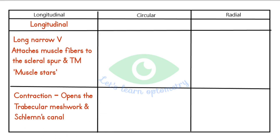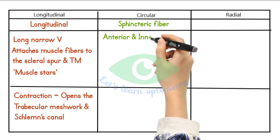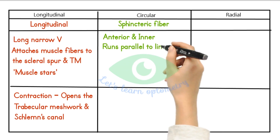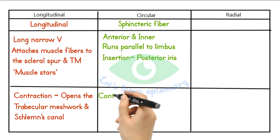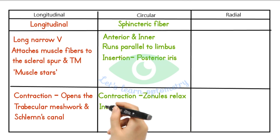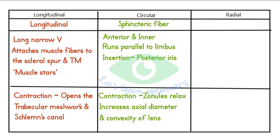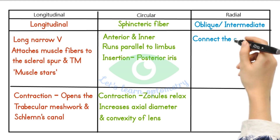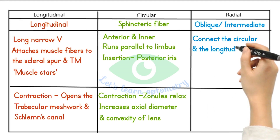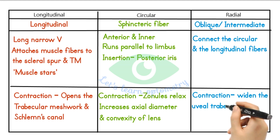Circular fibers, otherwise called sphincteric fibers, are more anterior and run parallel to the limbus. Their insertion is in the posterior iris. When these fibers contract, the zonule relaxes, increasing the lens axial diameter and its convexity, thus helping in accommodation. Radial fibers, also called oblique or intermediate fibers, connect the longitudinal with the circular fibers. The contraction of these fibers may widen the uveal trabecular spaces.